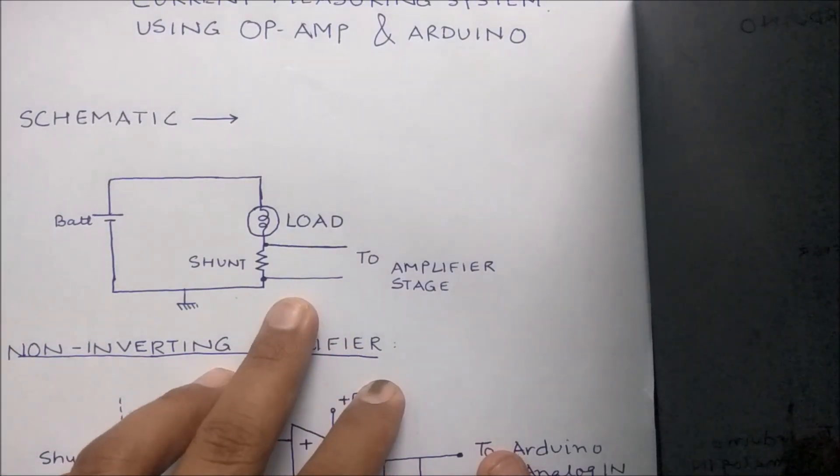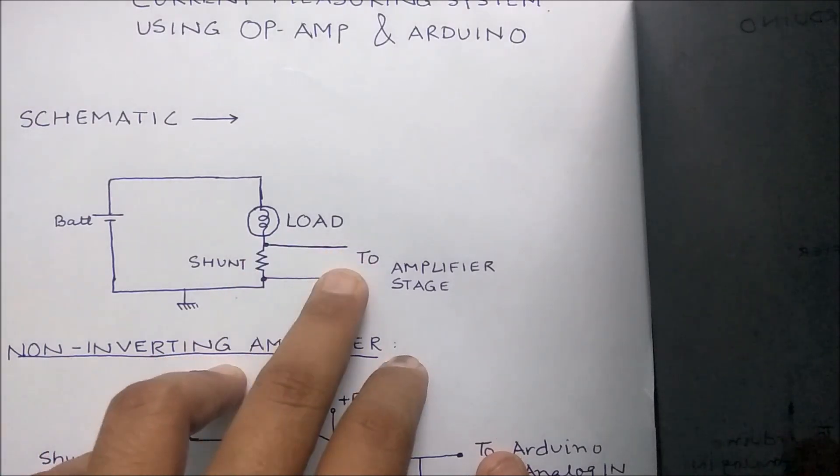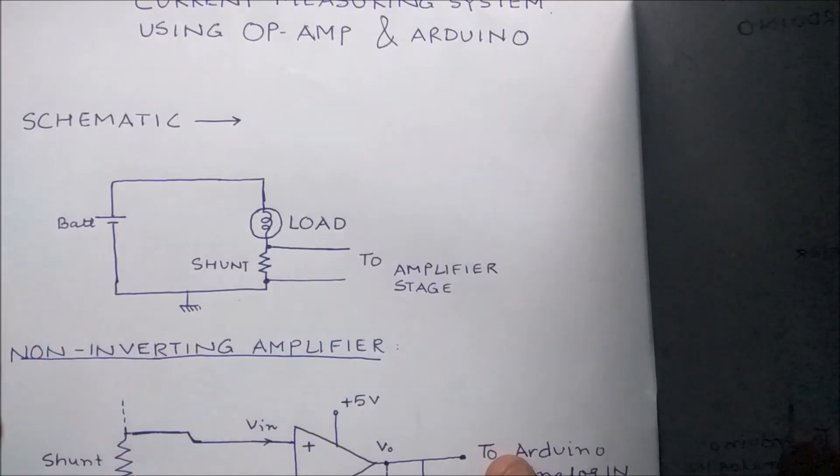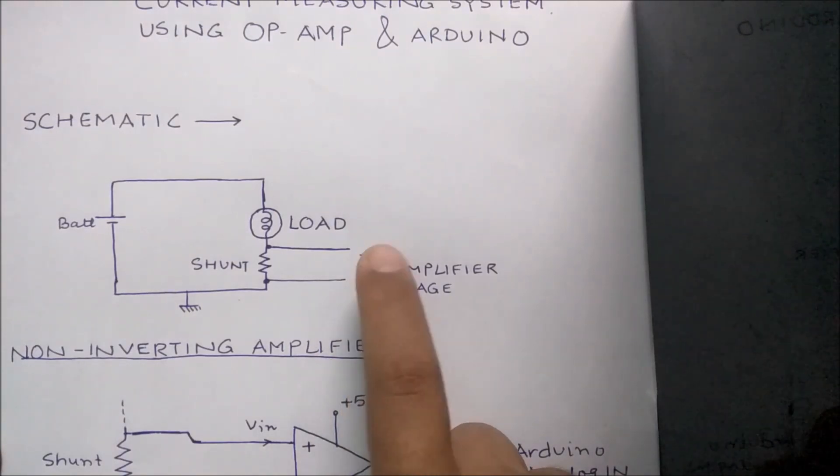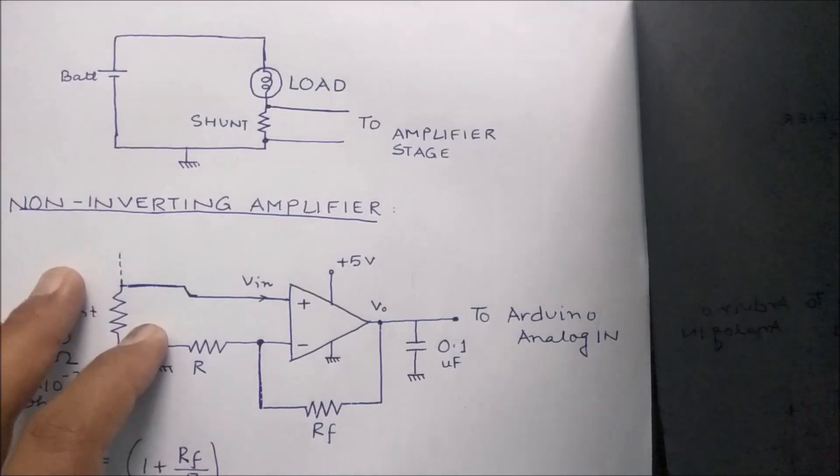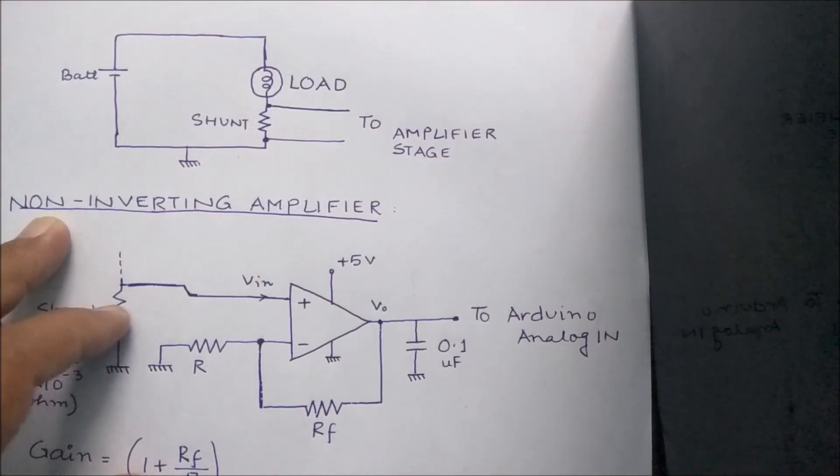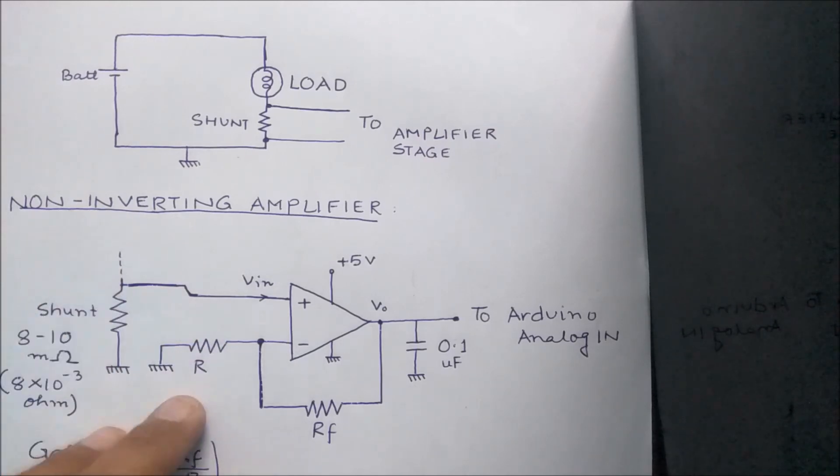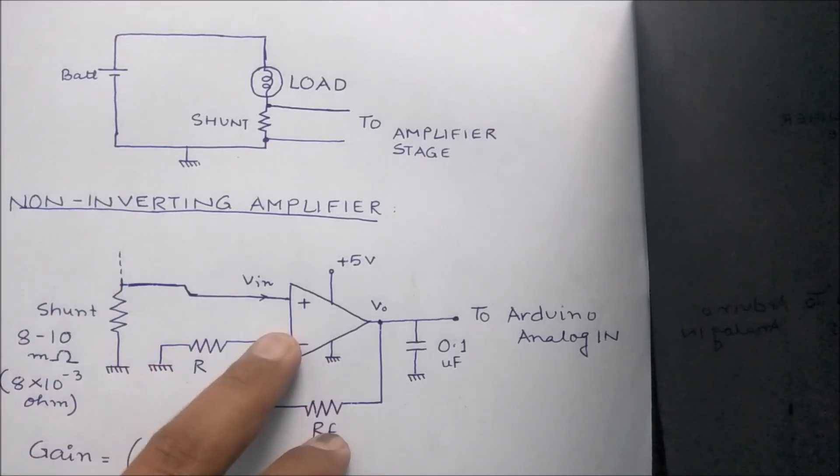Shunts are typically very small resistances, typically in the order of milliohms, so the voltage drop according to Ohm's law will be pretty less. This less voltage drop cannot be measured by Arduino because the resolution of the analog reading of the Arduino is pretty low and the minimum voltage is around 4.8 millivolts. Some voltages can also be less than 4.8 millivolts, so of course we need to amplify it to a certain degree so that we can get good accurate results from the Arduino.